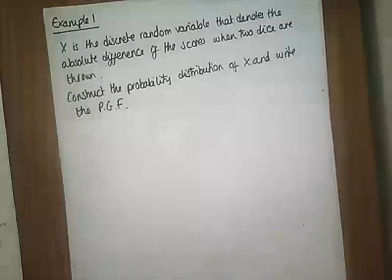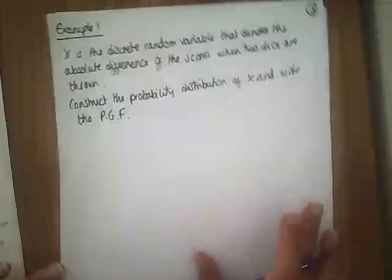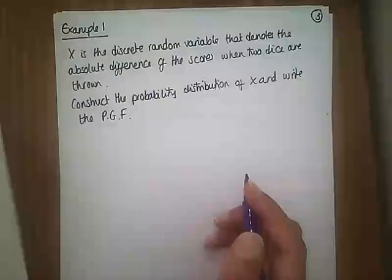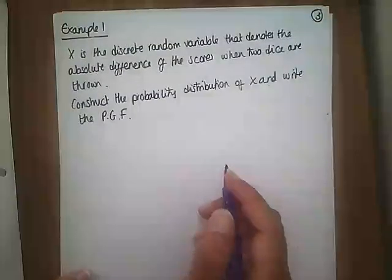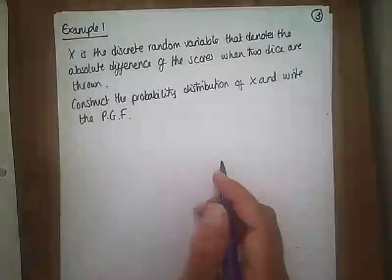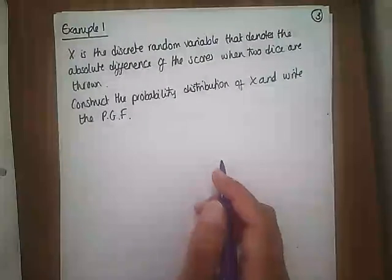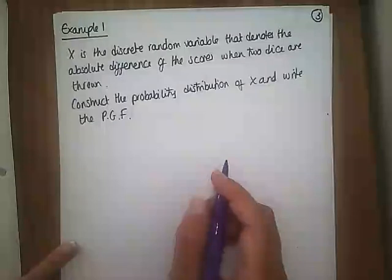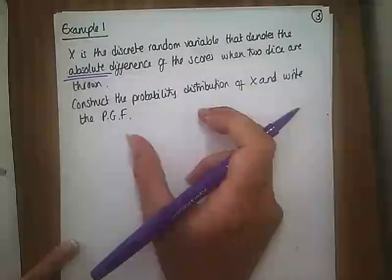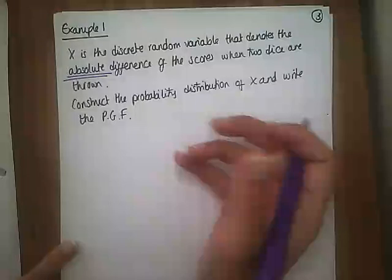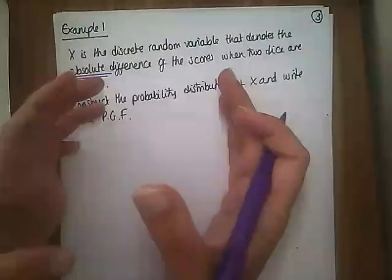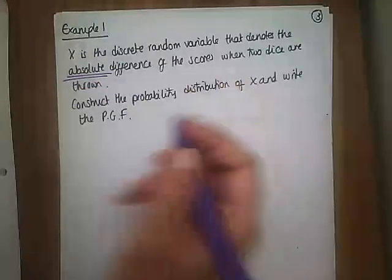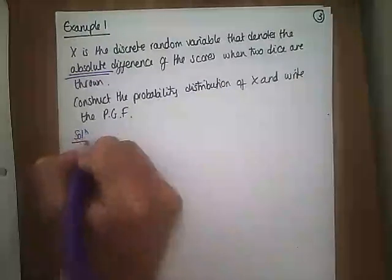Let's kick off with an example. X is a discrete random variable that denotes the absolute difference of the scores when two dice are thrown. We need to construct the probability distribution of X and write the PGF. By absolute difference, I mean it doesn't matter if it's positive or negative — you just take the positive version. To help us visualize it, I'm going to draw a sample space diagram, which gives us all the possible outcomes.